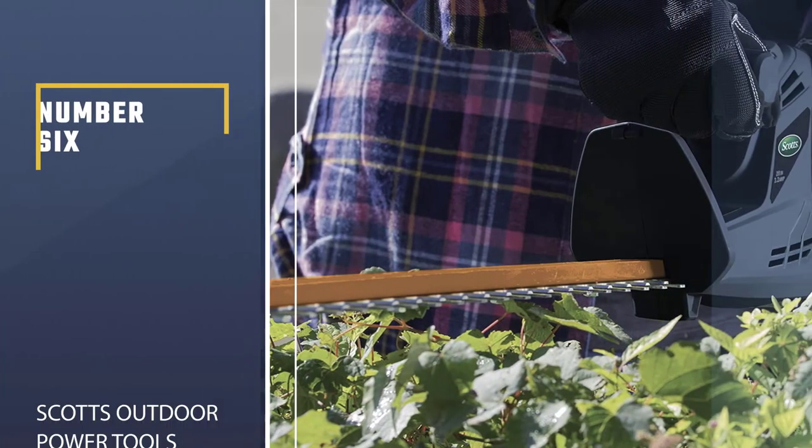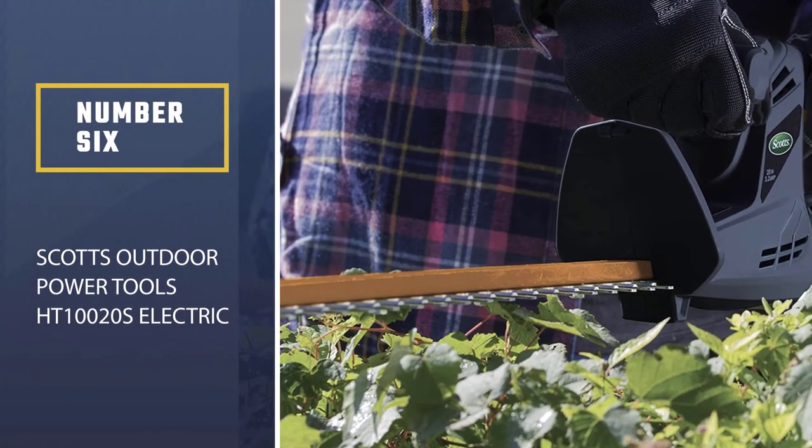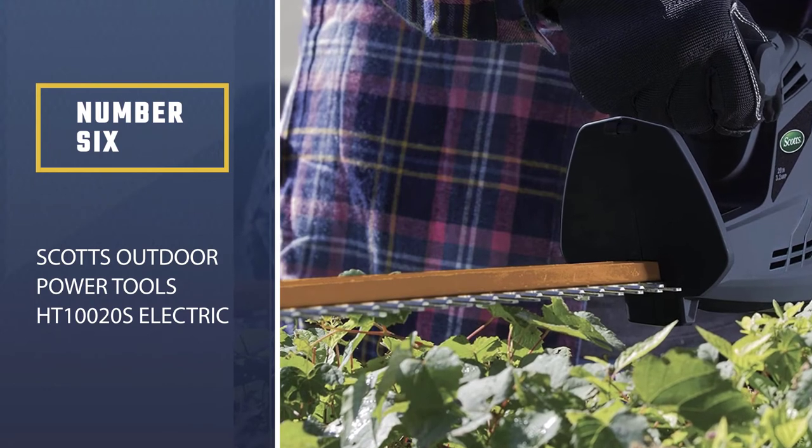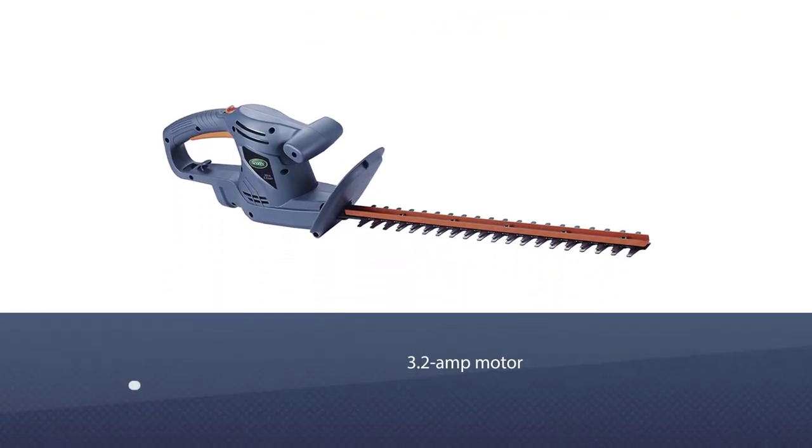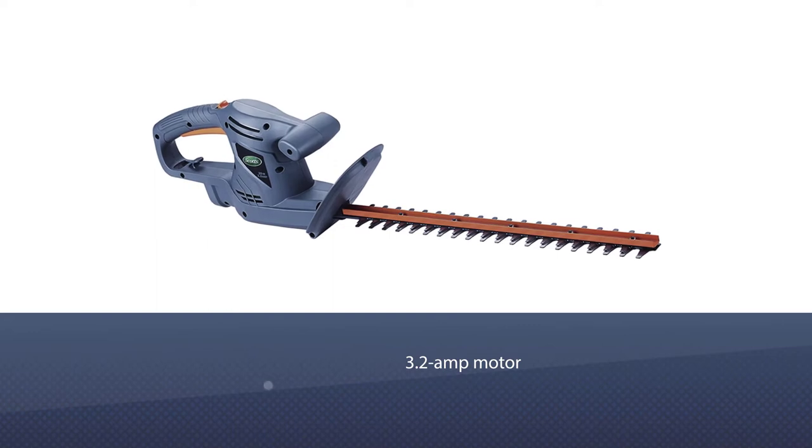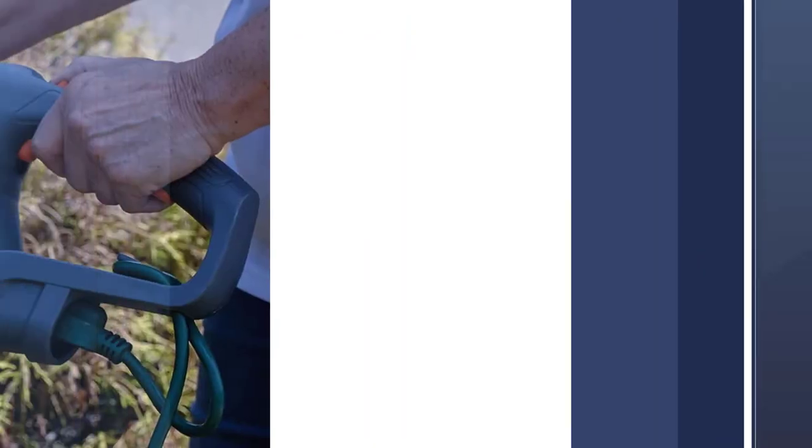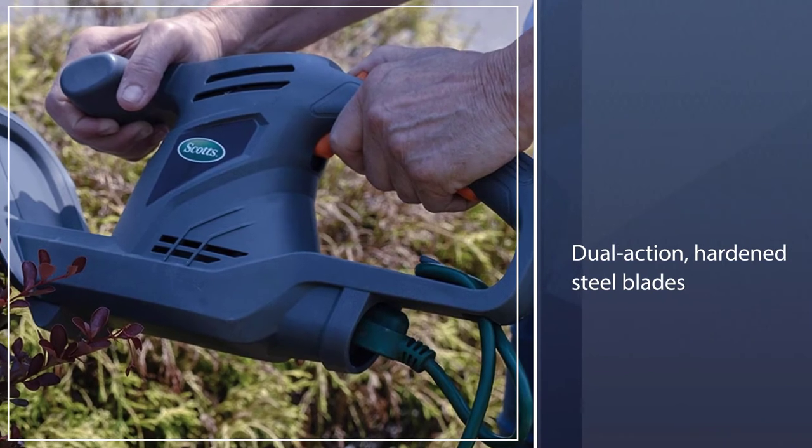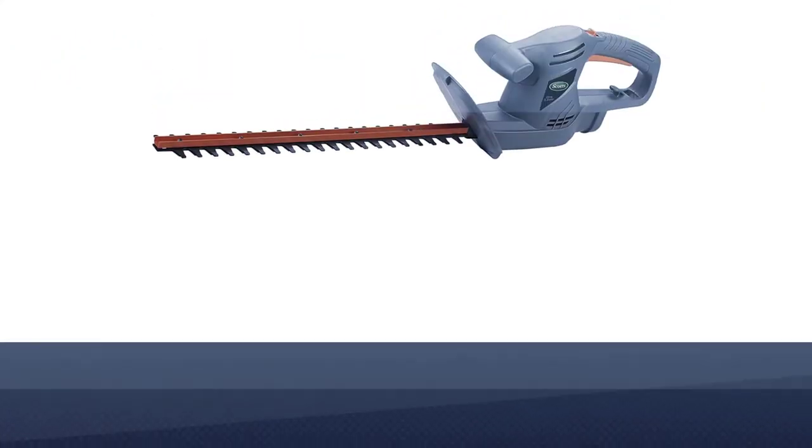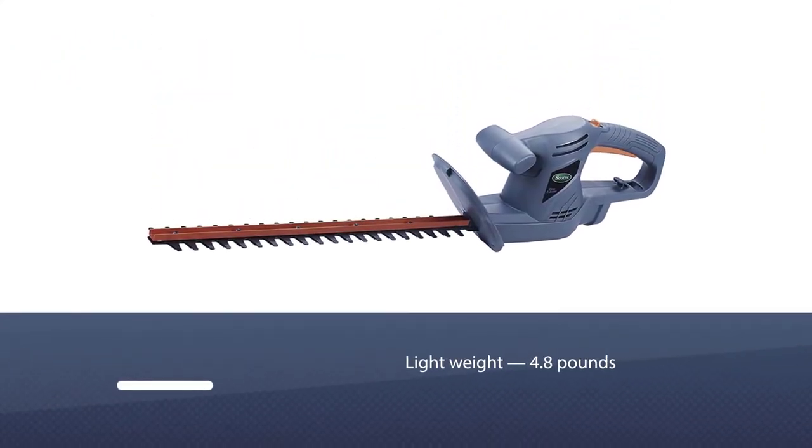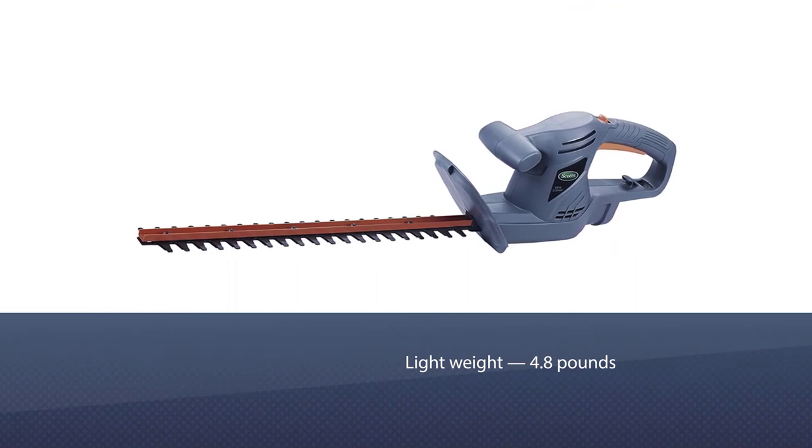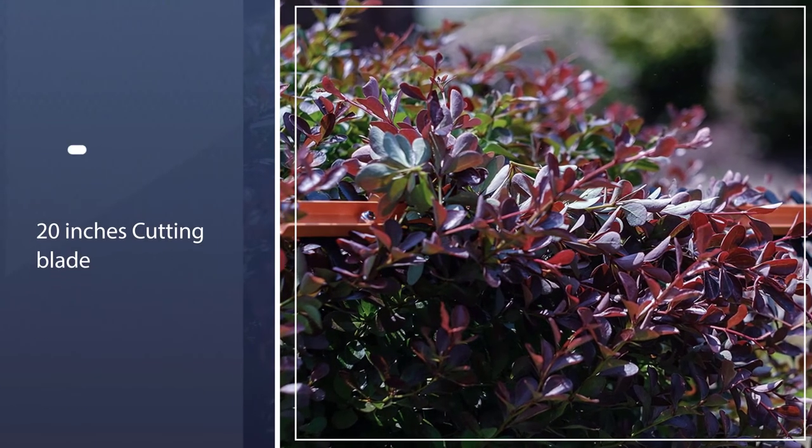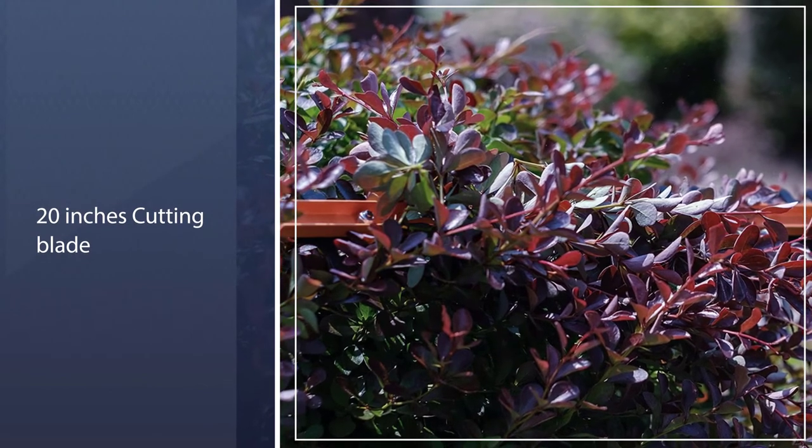Number six: Scott's Outdoor Power Tools HT10020S electric hedge trimmer. Effortlessly make clean cuts on all your bushes and shrubs with help from this model's 3.2 amp motor and dual action hardened steel blades. 20 inches in length, these blades are able to swiftly slice through thick twigs, stems, and branches.